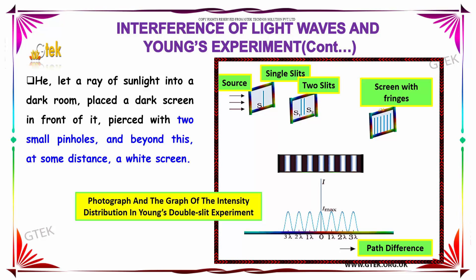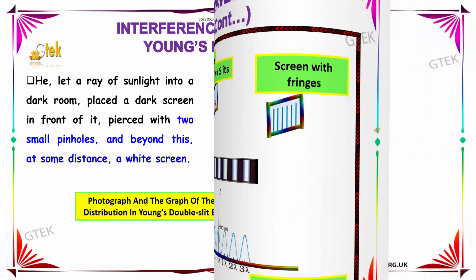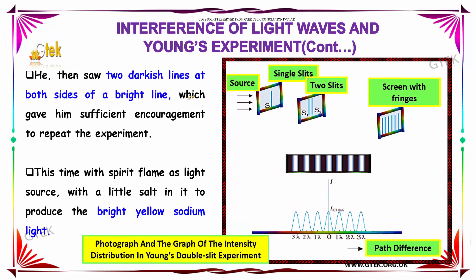He then saw two darkish lines at both sides of a bright line, which gave him sufficient encouragement to repeat the experiment.